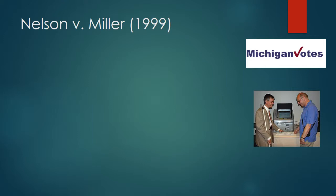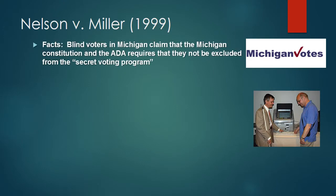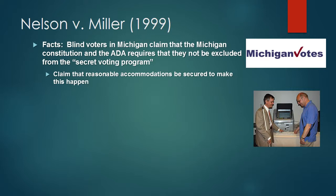The next case is Nelson v. Miller, again a 1999 case. Blind voters in Michigan claimed that the Michigan Constitution and the Americans with Disabilities Act require that they not be excluded from a secret voting program. The Michigan Constitution assures citizens of secret voting. The question before the court was whether the Michigan Constitution and the ADA require a reasonable accommodation to assure that blind voters could vote secretly. The blind voters claimed that reasonable accommodations could be secured to make this happen.